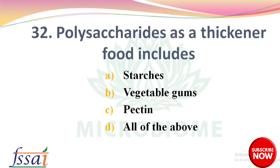Next question: polysaccharides used as thickeners in foods include — options: starch, vegetable gums, pectin, all of the above. The right answer is option D, all of the above — starch, vegetable gums, and pectin.